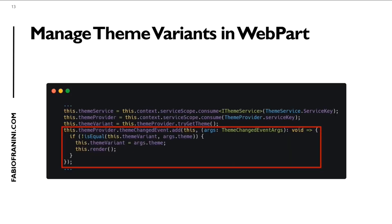The next thing is you need to manage the theme variant inside your web part. There is some code you have to implement. Basically, you need to take the theme service and the theme provider. The third variable is the theme variant — the current variation for the web part. A good thing to do is to manage the theme changed event, because we need to re-render the web part, since in the render method we calculate the variation for the theme inside the web part.